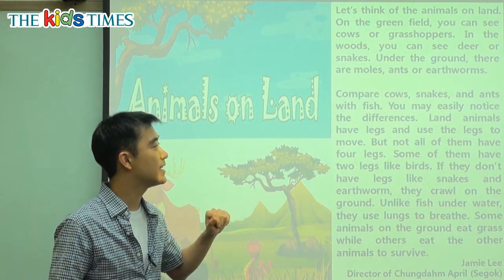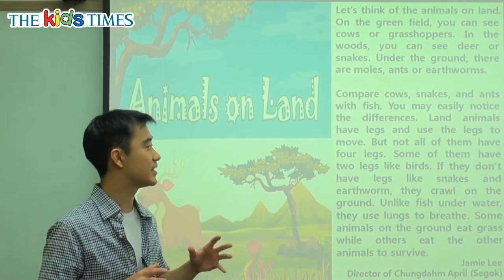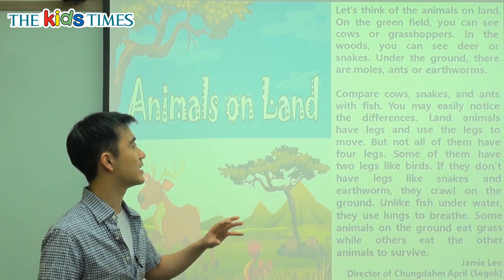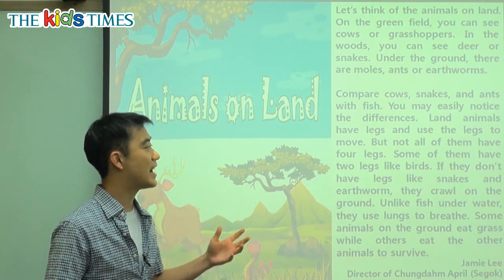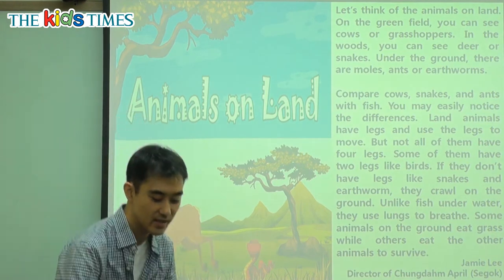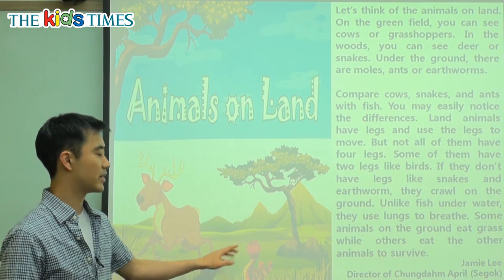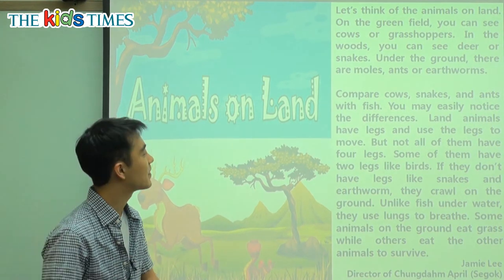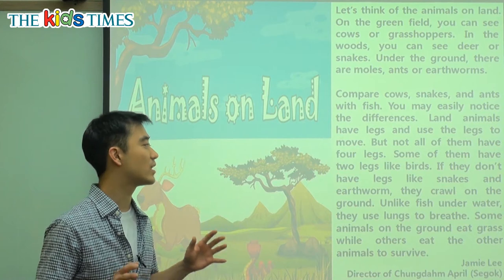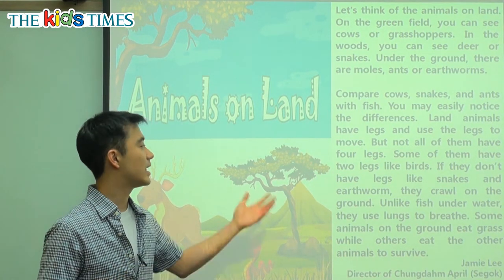You can easily notice the differences. Land animals such as deer and cows have legs and use the legs to move. Legs are what we use to walk. But not all of them have four legs — some of them have two legs, like birds.